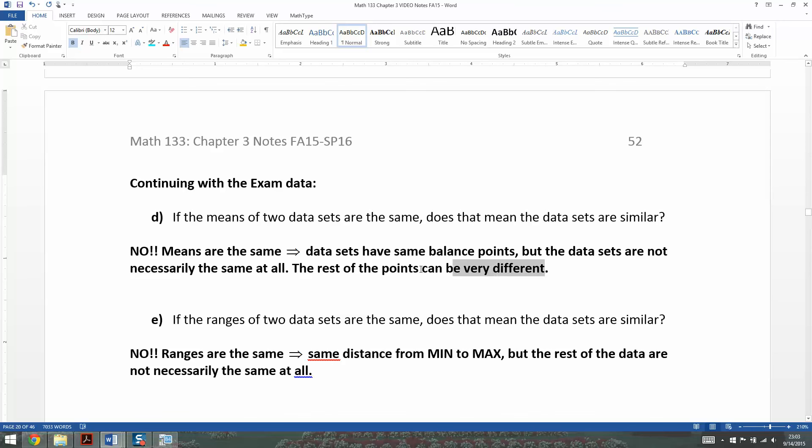Data sets have the same balance points or have balance points in the same place. But the data sets themselves are not necessarily the same at all. The interior points, the rest of the points, can be very different. Same thing with the ranges.